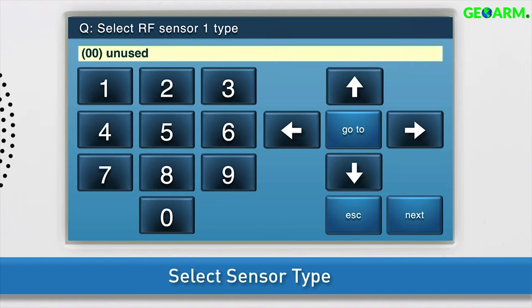Select the sensor type. 00 unused will display in the answer box by default. There are two ways to change the sensor type. Option 1.